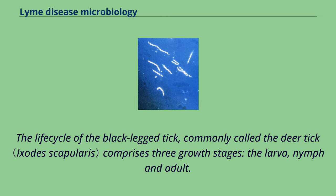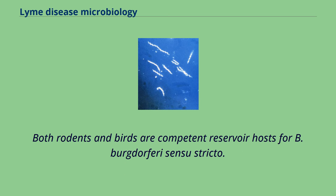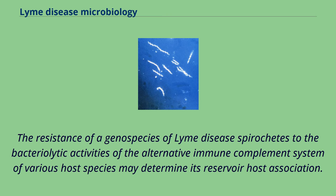The life cycle of the black-legged tick, commonly called the deer tick, comprises three growth stages: the larva, nymph, and adult. Whereas B. burgdorferi is most associated with deer ticks and the white-footed mouse, B. afzelii is most frequently detected in rodent-feeding vector ticks, and B. garinii and B. valaisiana appear to be associated with birds. Both rodents and birds are competent reservoir hosts for B. burgdorferi sensu stricto. The resistance of a genospecies of Lyme disease spirochetes to the bacteriolytic activities of the alternative immune complement system of various host species may determine its reservoir-host association.